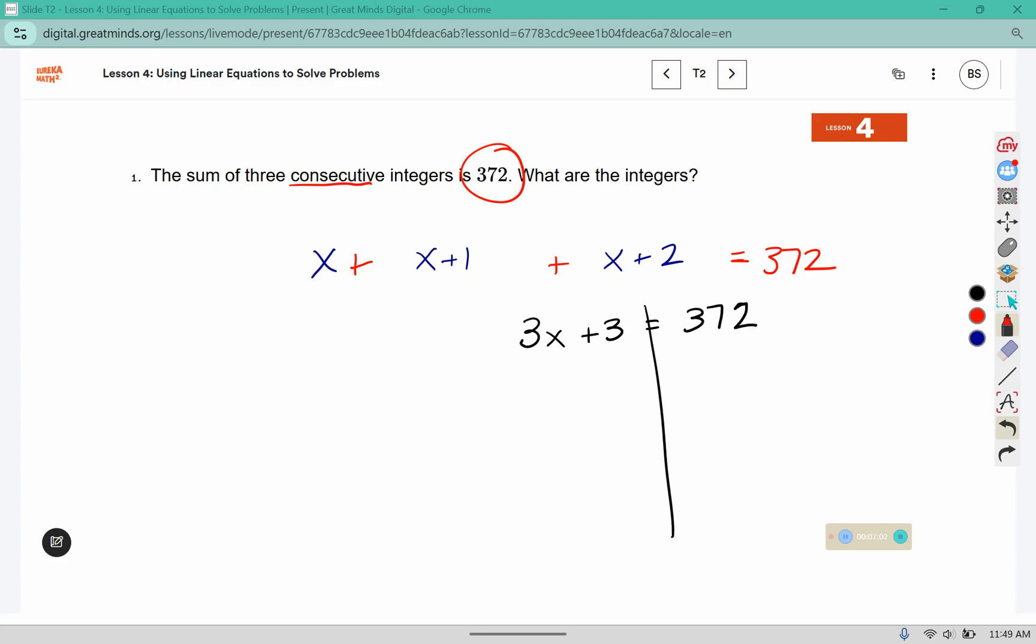Now we can solve it just like a regular equation. I'm going to divide both sides by three. This is the first integer. It says what are the integers, so we need all three. If this one is 123, this one should be 124, and this one should be 125. You can also check that when you add those three values together, does it come out to 372? And it does.